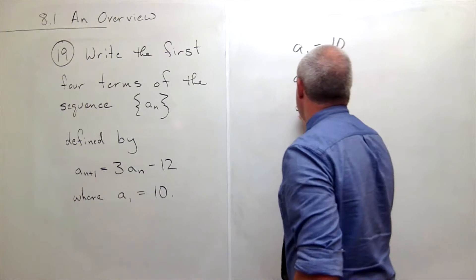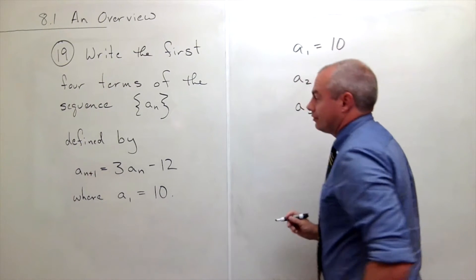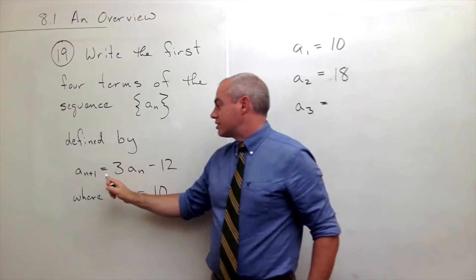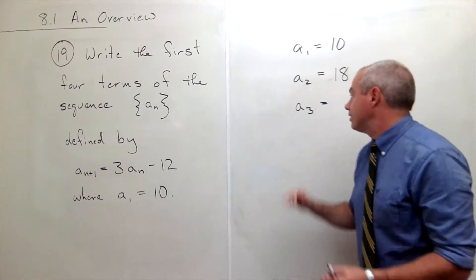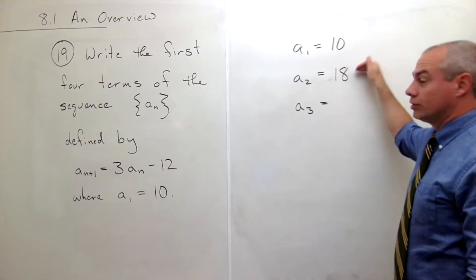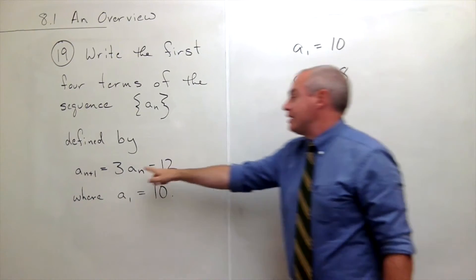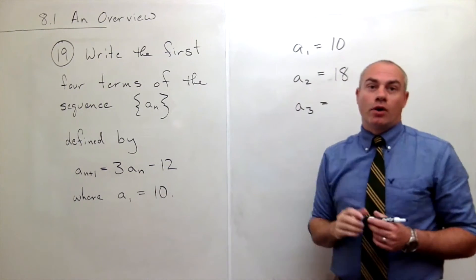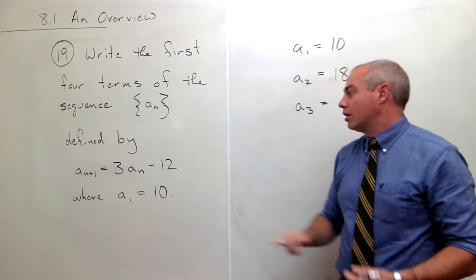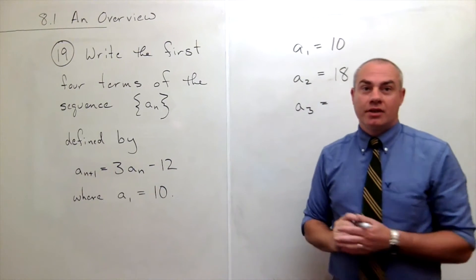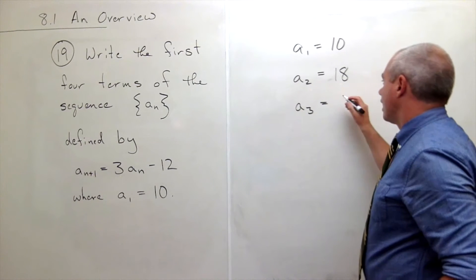How do I get a sub 3? Well my relation here says, you take the guy before it, a₂, multiply him by 3 and subtract 12. So if I multiply 18 by 3, what do I get? 54, subtract 12 would be what? 42.